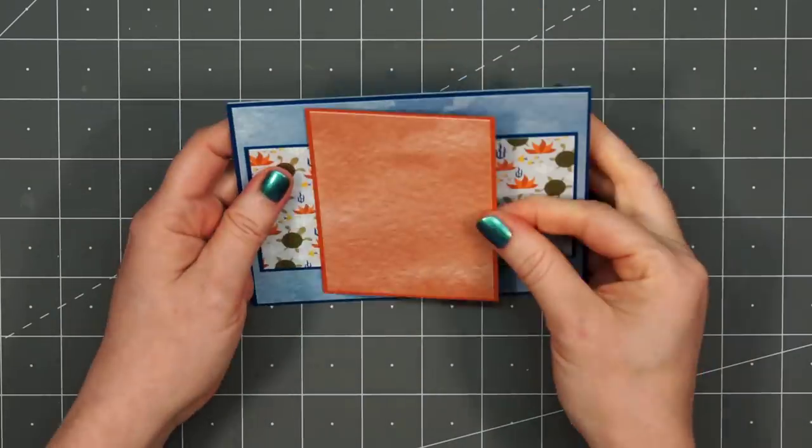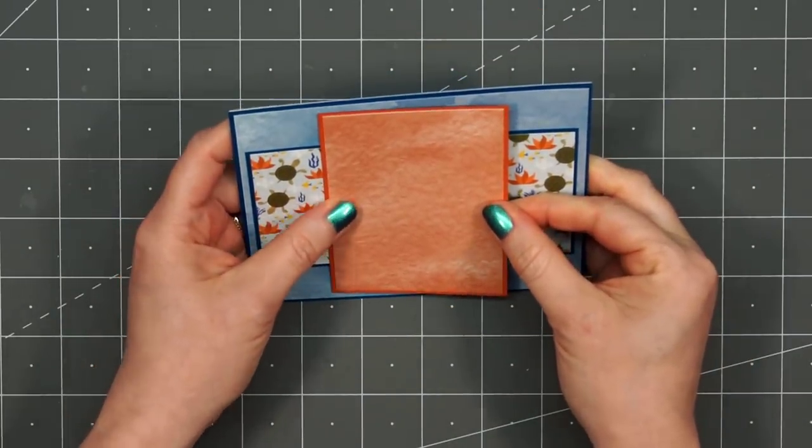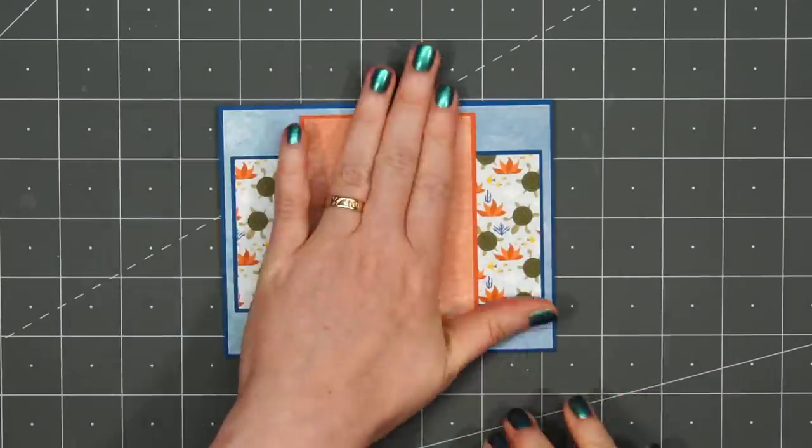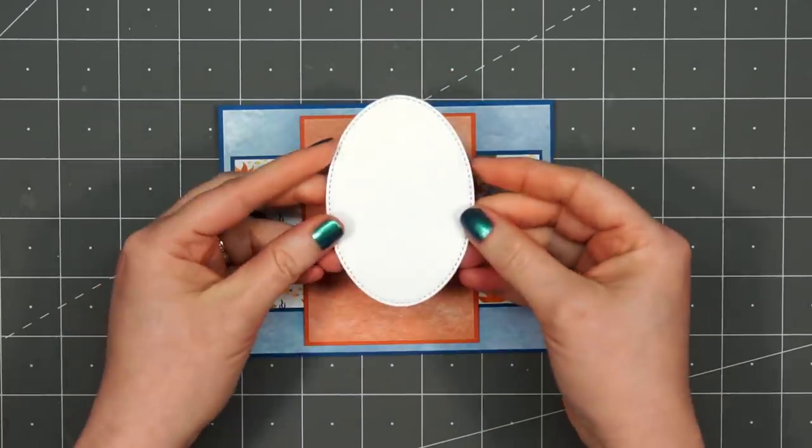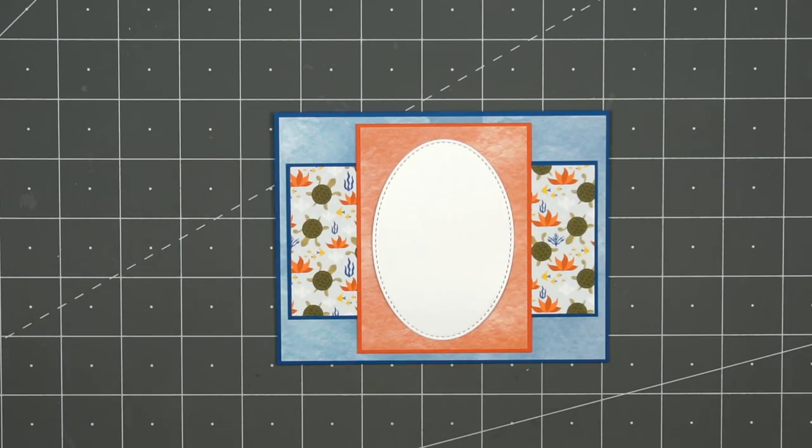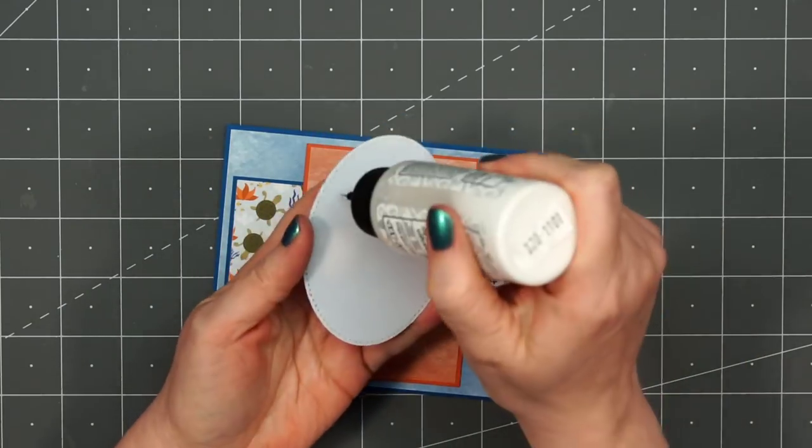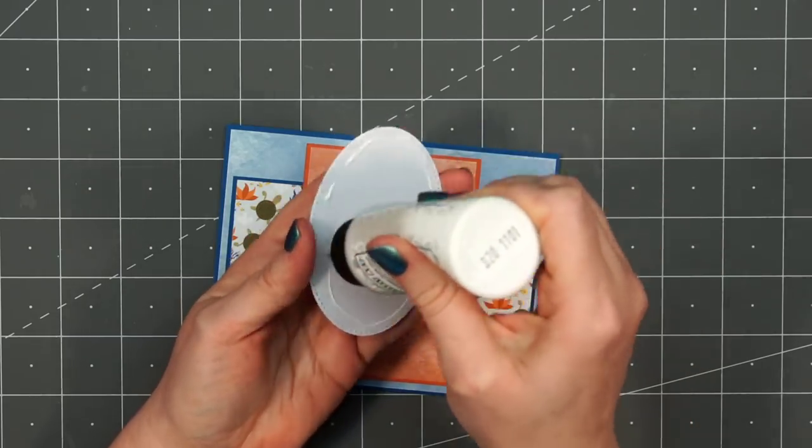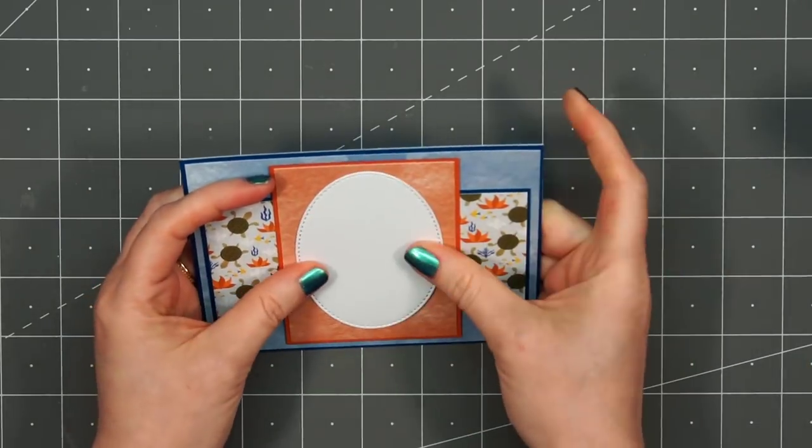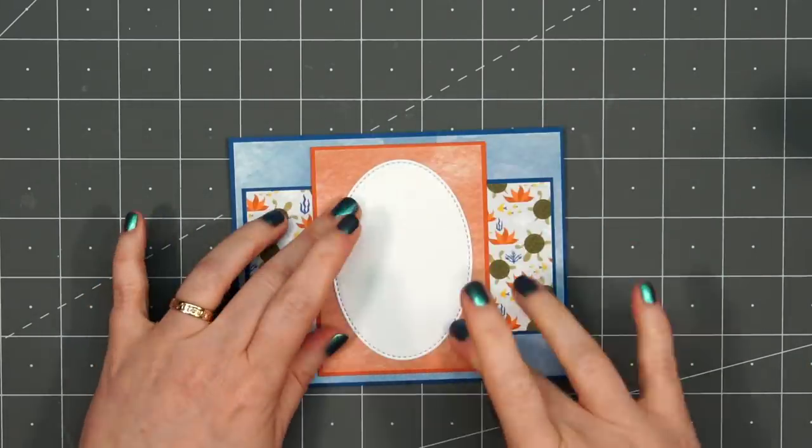For that small rectangle, I used some more of that Watercolor Whimsy paper, this time in orange, layered it on some orange cardstock, and then I'll be adding a stitched oval die cut. I used some white shimmer cardstock for that, just for a little extra detail on the card. I'll adhere it using some liquid adhesive.